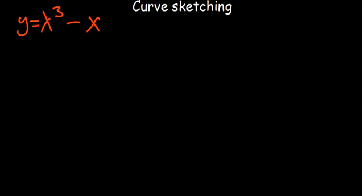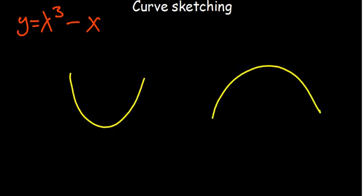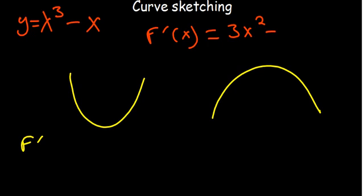A few things to take note of: understand the two parabola shapes — there is a case where you have a minimum and a case where you have a maximum. The first derivative is what you get when you differentiate the given equation. In this case, if you differentiate our function, the first derivative is going to be 3x squared minus 1.